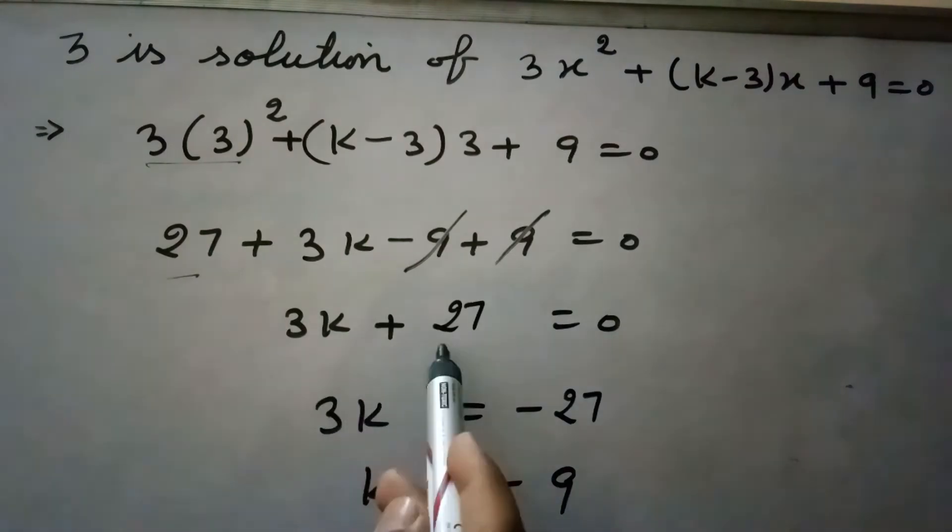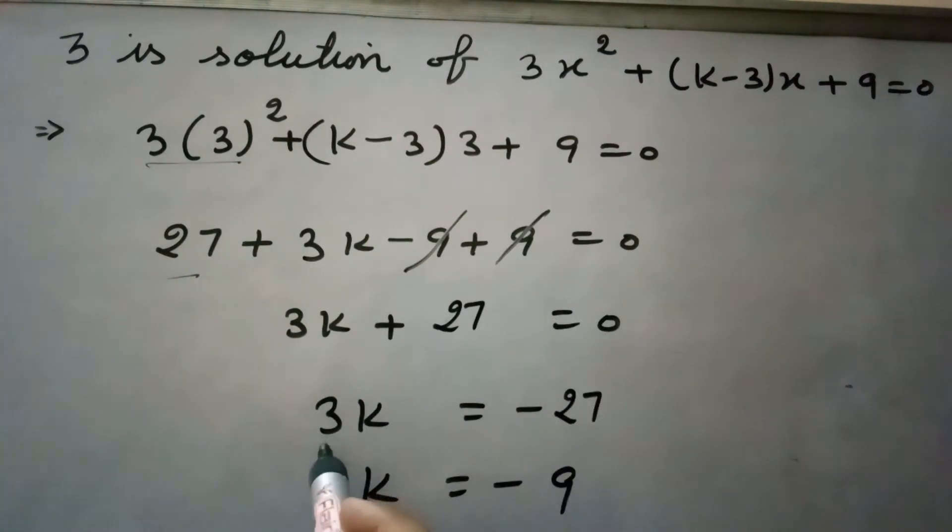So it is left 3k plus 27 equal to 0, 3k equals to minus 27, so k equals to minus 9. So this is the value of k here.